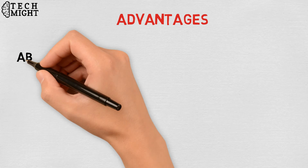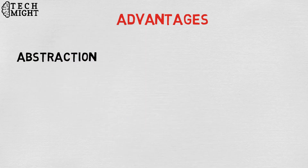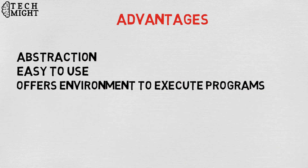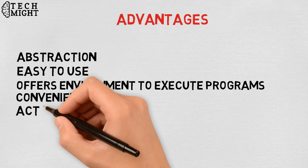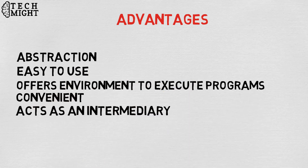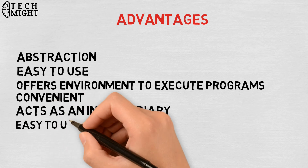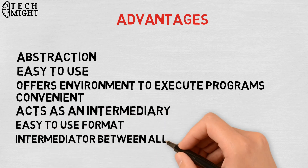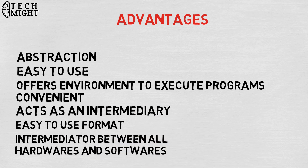Advantages of using an operating system: Allows you to hide details of hardware by creating an abstraction. Easy to use with a GUI. Offers an environment in which a user may execute programs. The operating system must make sure that the computer system is convenient to use. Operating system acts as an intermediary among applications and the hardware components. It provides the computer system resources with easy-to-use format. Acts as an intermediator between all hardware and software of the system.